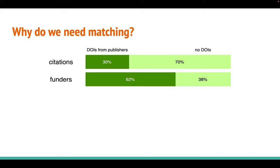But why do we need matching in the first place? At Crossref every day we deal with tens of thousands of metadata records deposited by publishers. In this data, we see that 70% of all bibliographic citations do not contain the identifier of the cited item. The situation is better, but far from perfect, for funder information — 38% of funder mentions do not contain the funder identifier. This leaves us with huge numbers of citations and funder mentions unlinked, meaning that we cannot follow or analyze those relationships. If we want to fill this gap, we need metadata matching, and because of the scale of the data, matching of those mentions has to be automatic.